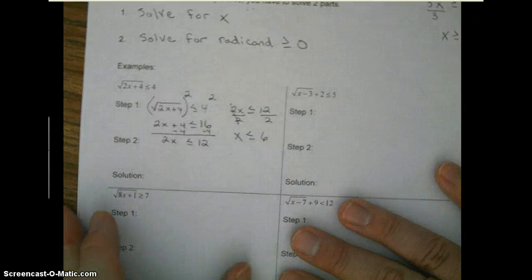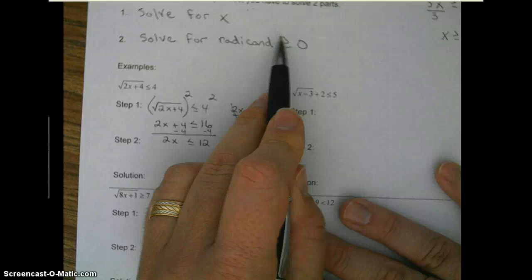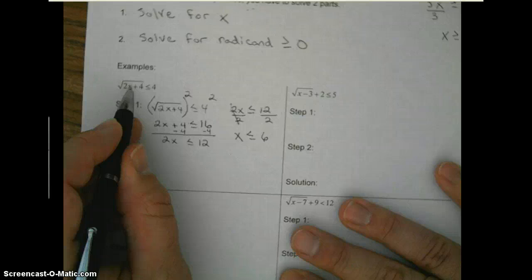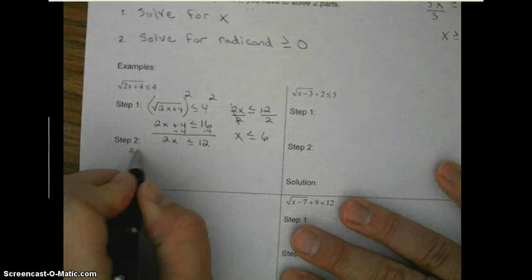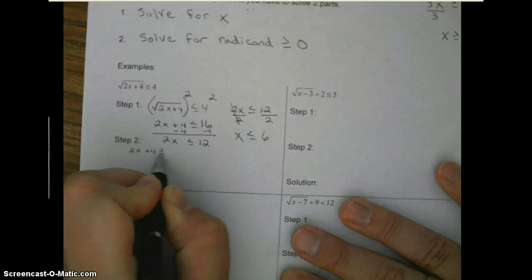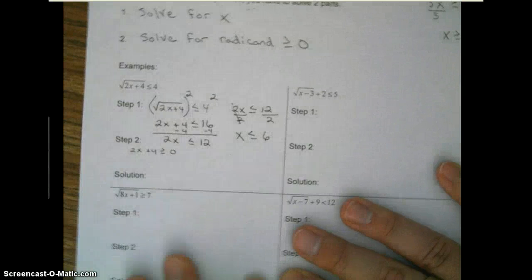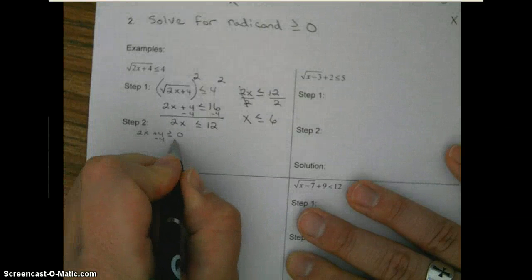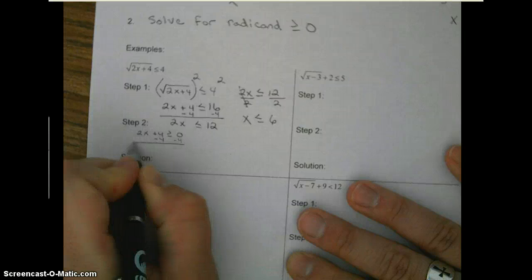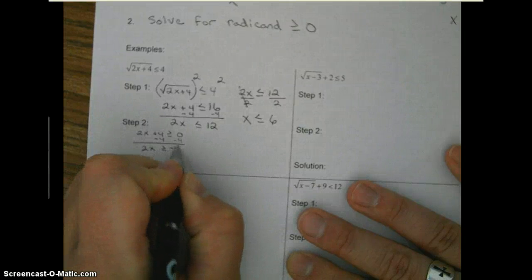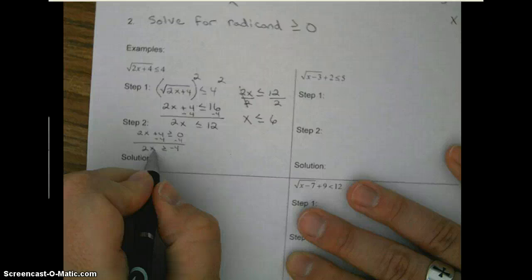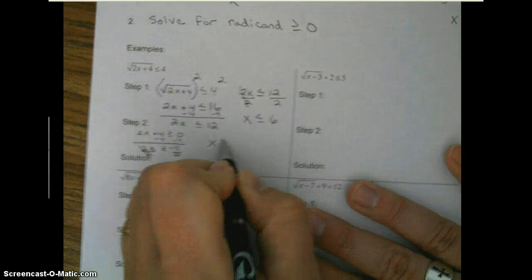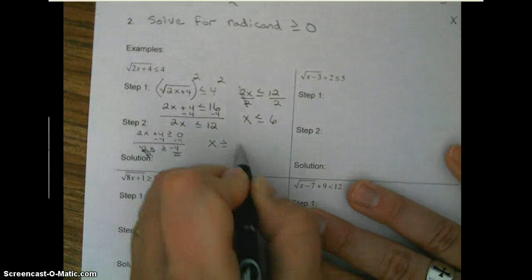Step two: solve for radicand greater than or equal to zero. So the radicand is 2x plus 4, greater than or equal to zero. Subtracting 4 on each side, we get 2x is greater than or equal to negative 4. Divide by 2, so x is greater than or equal to negative 2.